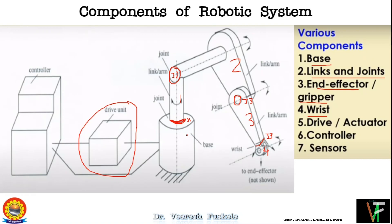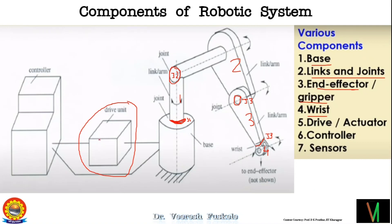The drive unit, also known as the actuator, is similar to the human drive system. Humans have muscles representing the mechanical system, and a hydraulic system like blood driven by the heart. Similarly, in robotics, the drive unit can be of different types: purely mechanical drives such as gear and pinion arrangements, chain drives, or belt drives.